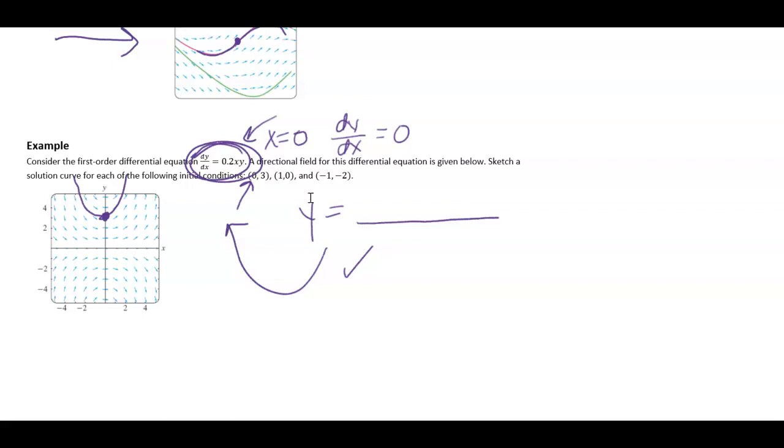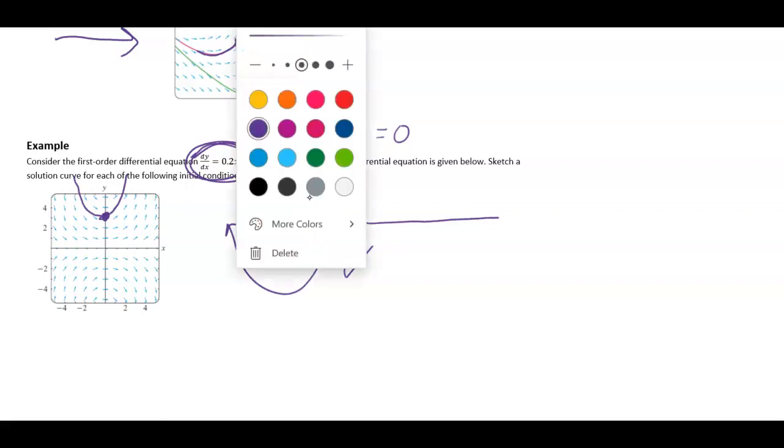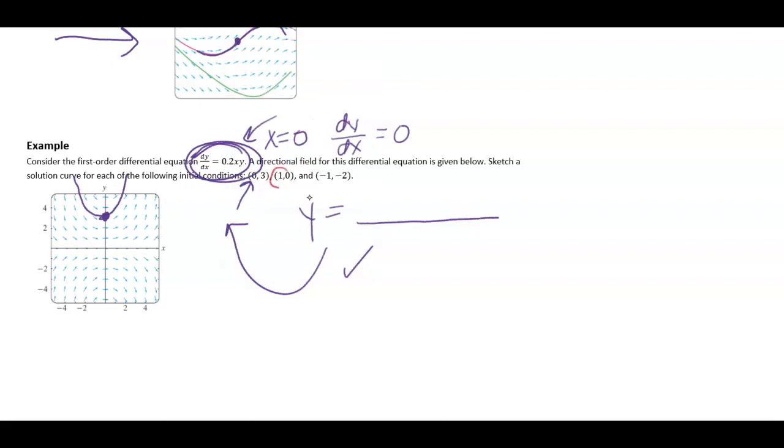I'm going to go ahead and change my color so I can do this other one. Okay. Let's say instead I'm at the point 1, 0. Well, if I plug in y equals 0, I'm always going to have my derivative of 0. But then that means that my solution curve through the x-axis is this line here.